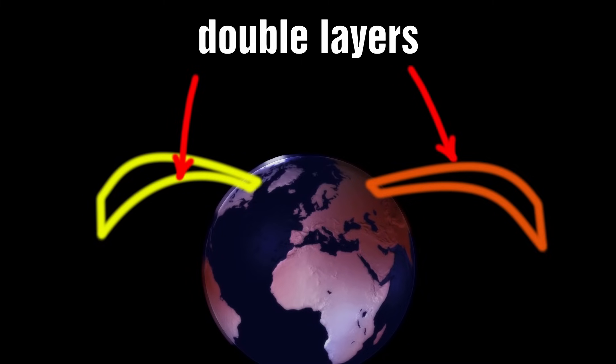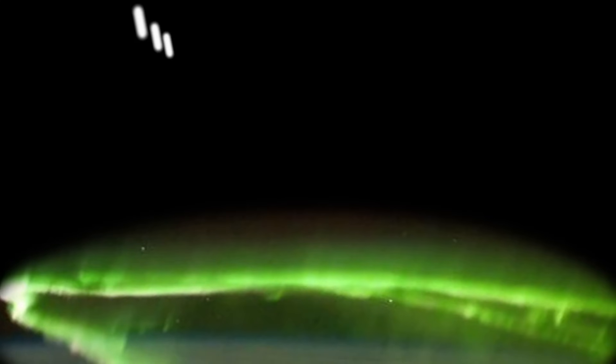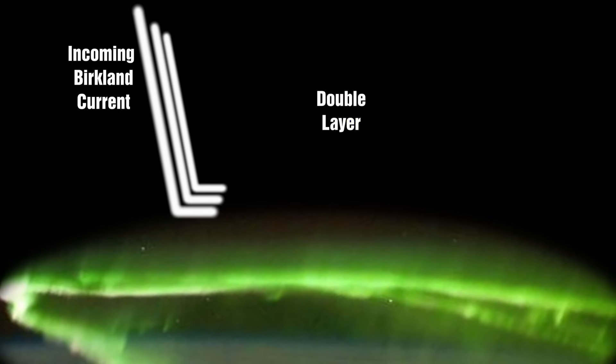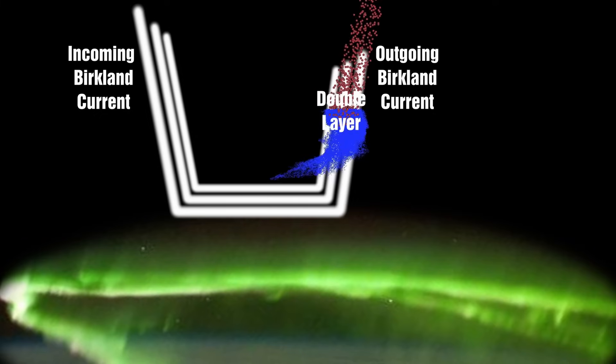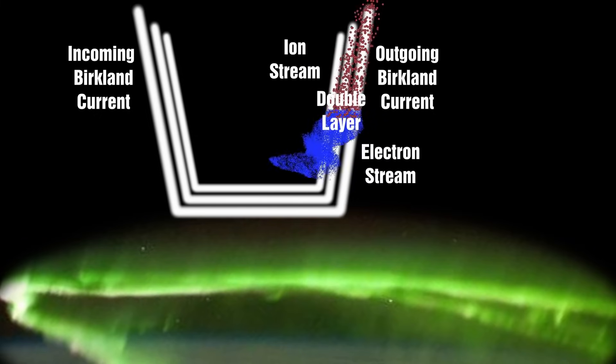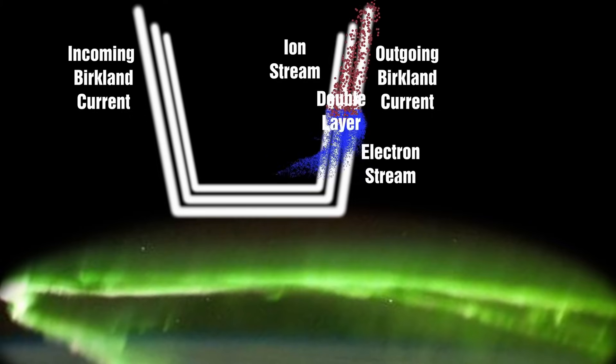A spacecraft passing over these would measure a voltage inversion. Above the double layers, the equal potential lines form cylinders around the current-carrying flux tube, similar to what happens in the laboratory. Below the double layer, there is a beam of high-energy electrons accelerated at least in part in the double layer. Most of their energy is dissipated in the ionosphere where they produce the aurora. Again, this is similar to the laboratory experiments where the charged particles are accelerated in the tube.